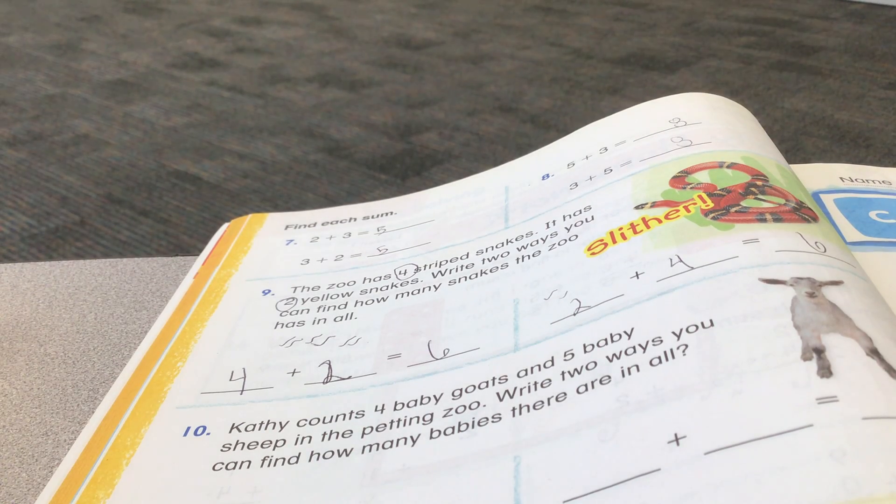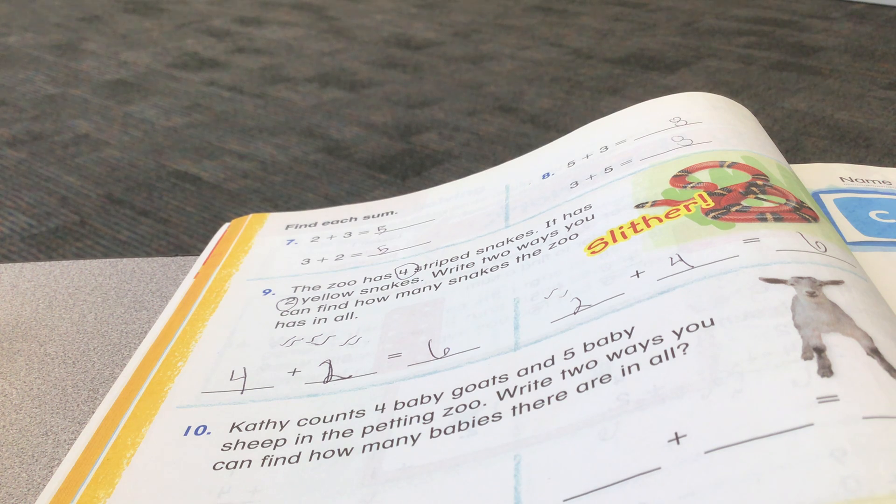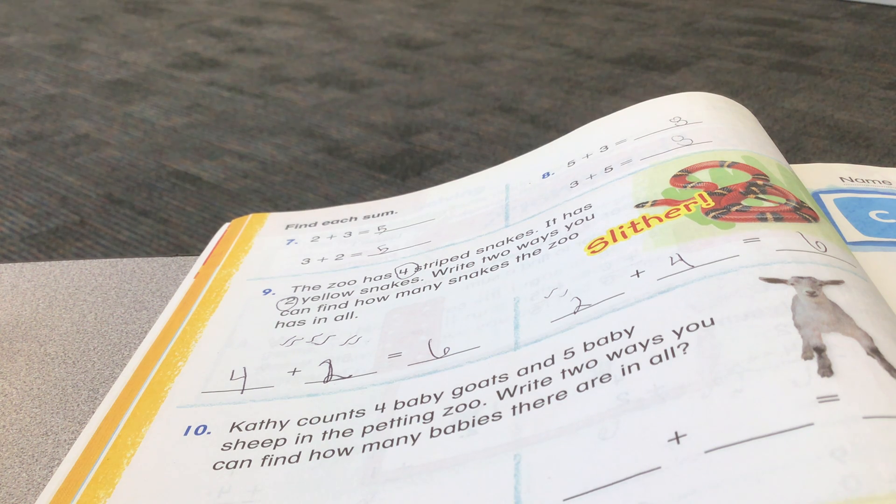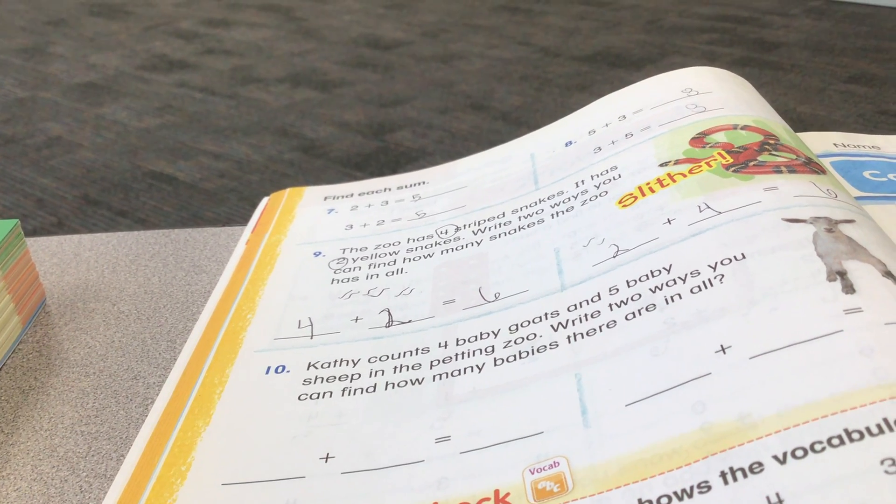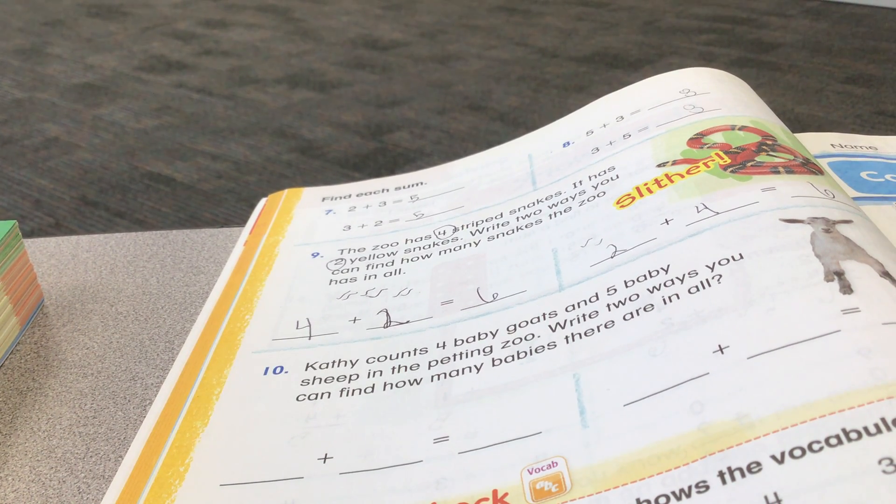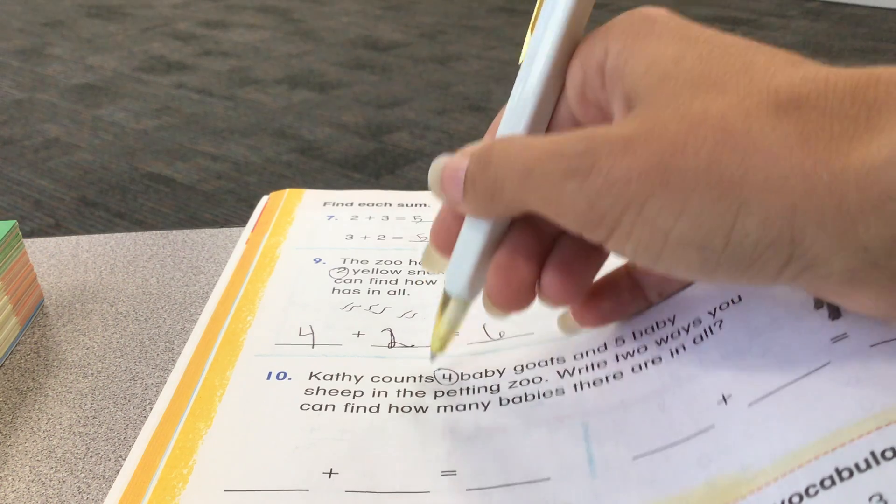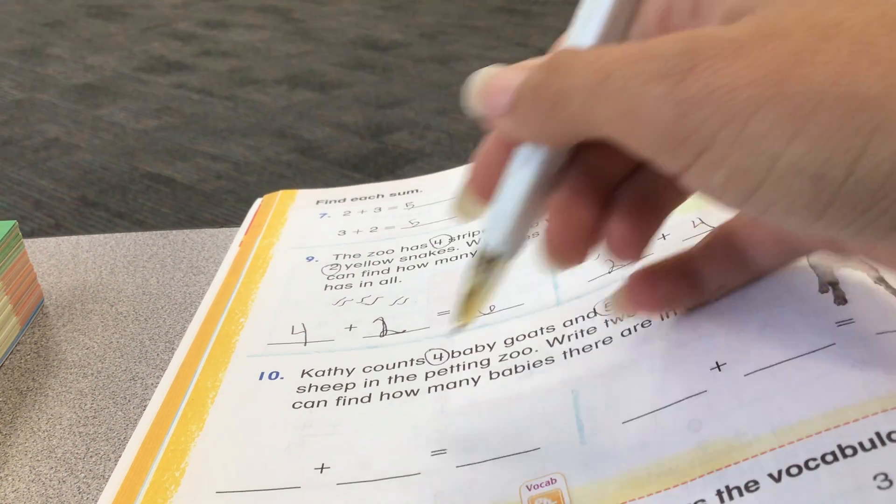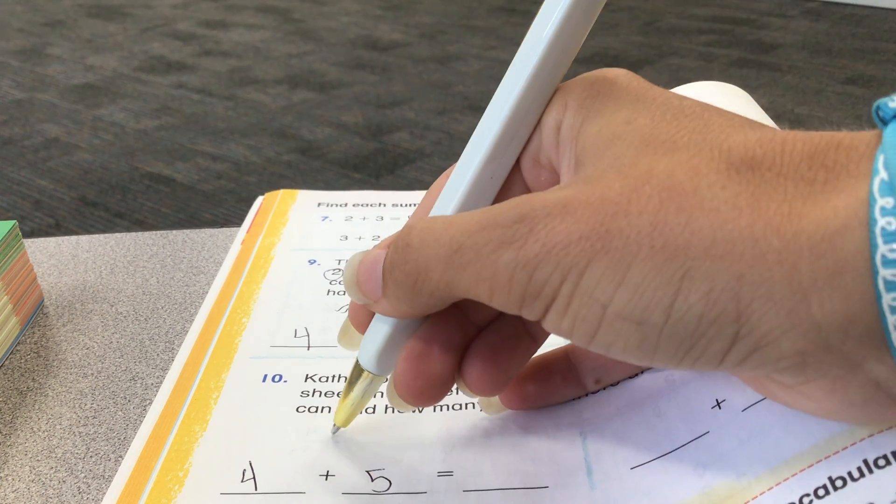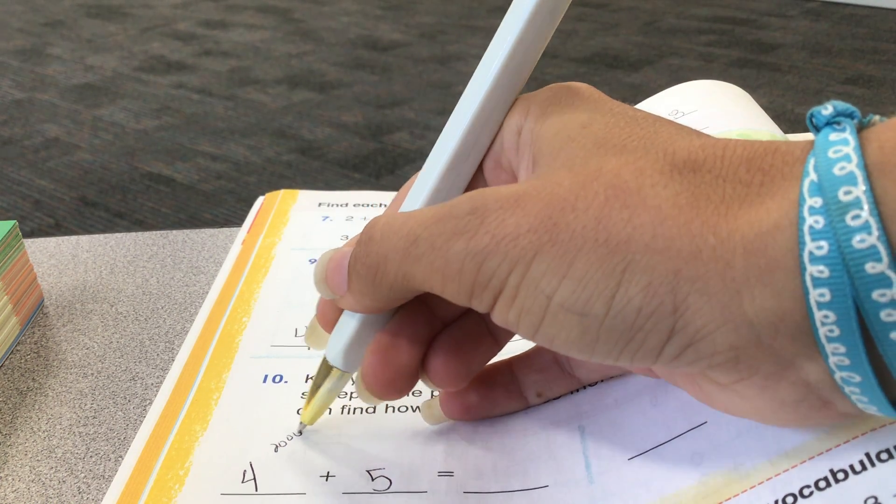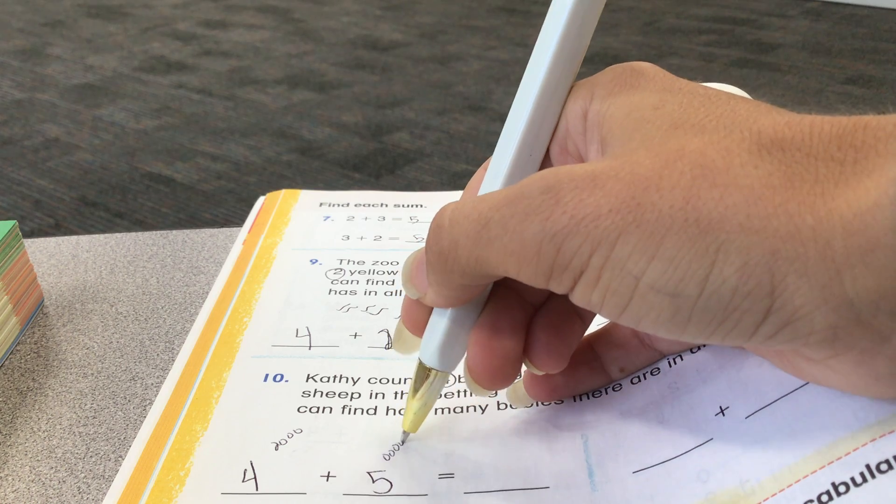Kathy counts 4 baby goats and 5 baby sheep in the petting zoo. Write 2 ways you could find how many babies. I don't think they mean baby animals, right? Because we're talking about goats and sheep. So, we have 4 baby goats and 5 baby sheep. Let's draw that out. 1, 2, 3, 4. 1, 2, 3, 4, 5.